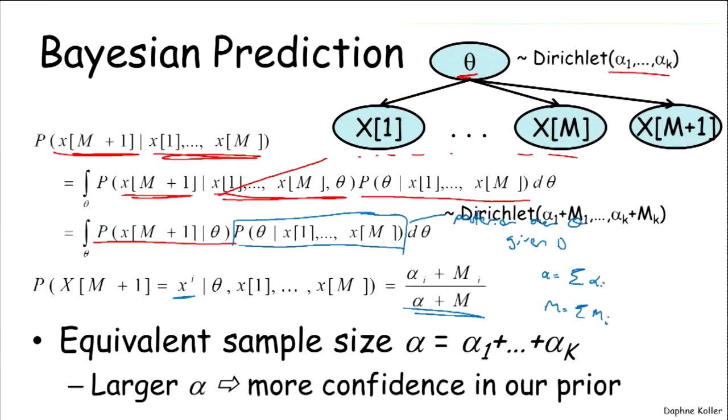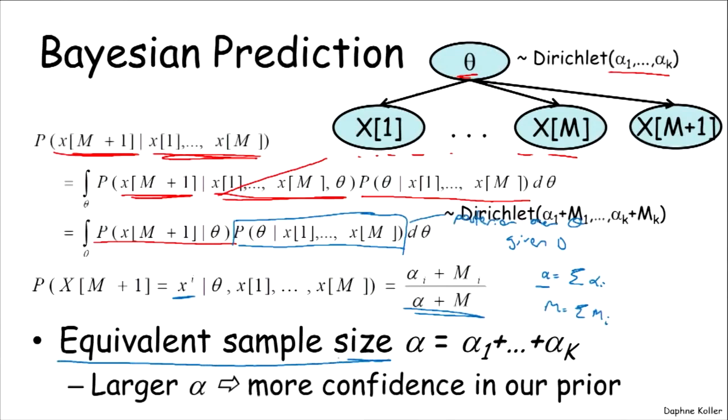Now, notice what happens here. This parameter alpha that we just defined, which is the sum over all of the alpha i's that I have, is the parameter known as the equivalent sample size.